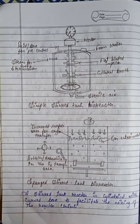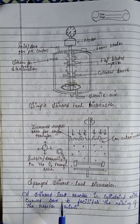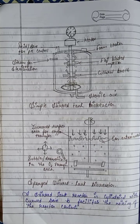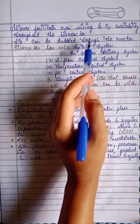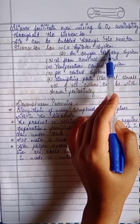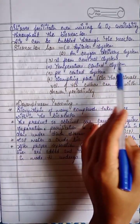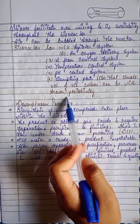Common bio-reactors include the simple stirred tank bio-reactor and the sparged stirred tank bio-reactor. The stirred tank reactor is cylindrical with a curved base to facilitate mixing of the reactor contents. A stirrer facilitates even mixing and oxygen availability throughout the bio-reactor. Bio-reactors contain an agitator system, an oxygen-delivering system, a foam control system, a temperature control system, a pH control system, and sampling ports so that small volumes of culture can be withdrawn periodically.